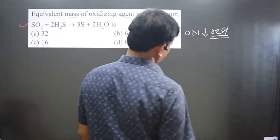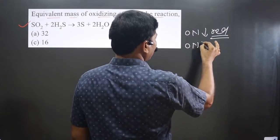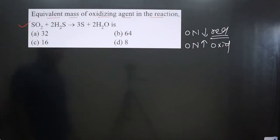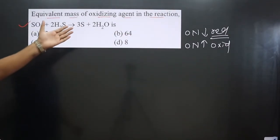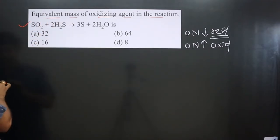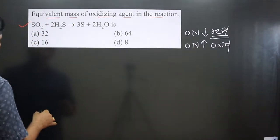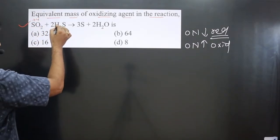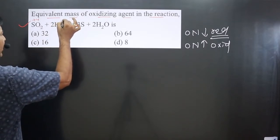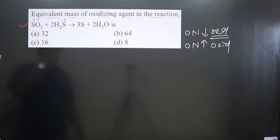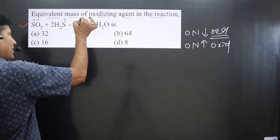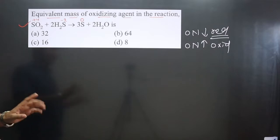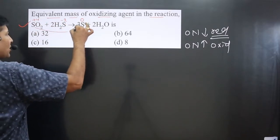Decrease in oxidation number is always a reduction reaction, and increase in oxidation number is always an oxidation reaction. So first we identify which is oxidation and which is reduction, then we identify the oxidizing agent. Writing the oxidation numbers: in SO₂, sulfur is in +4 oxidation state; each hydrogen is +1 giving sulfur an overall charge context. Elemental sulfur (S) is in zero oxidation number as a neutral element.